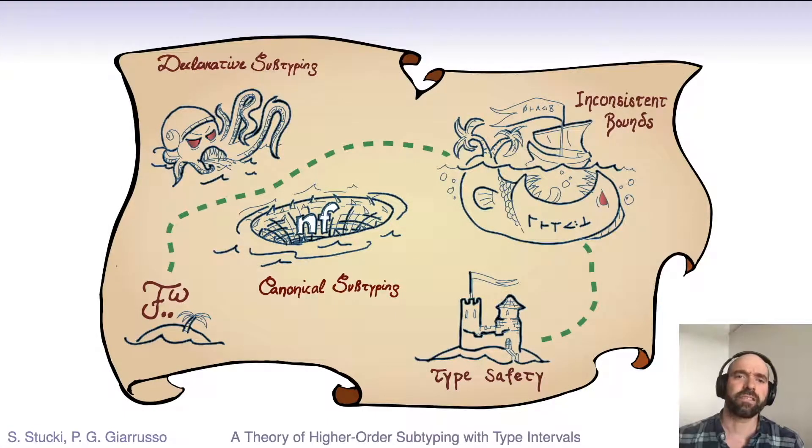The talk is going to take us on a metatheoretic journey, a bit of an odyssey actually, where we'll have to carefully navigate the challenges of different sorts of subtype systems, avoid the pitfalls of inconsistent bounds in the presence of subtyping reflection. It's the stuff of type theoretic nightmares.